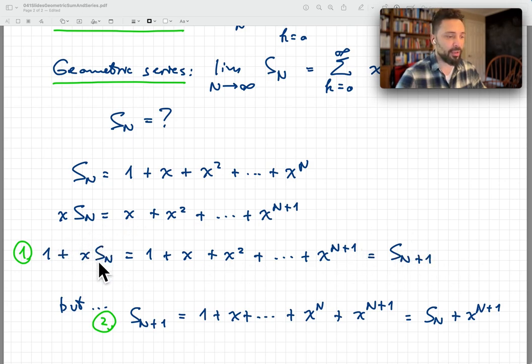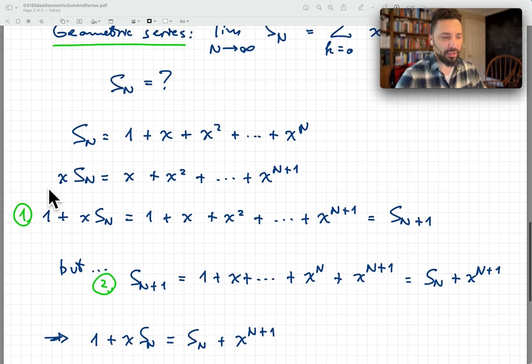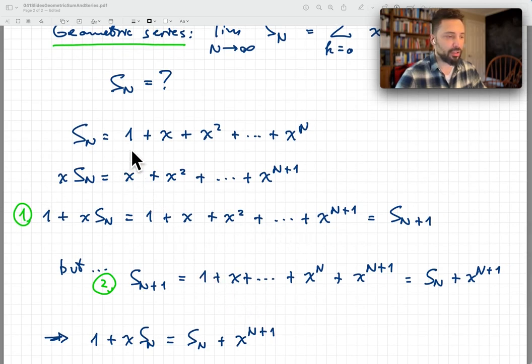So 1 plus x times S_n is S_n plus 1. But we know what S_n plus 1 is, actually. S_n plus 1 is exactly this whole thing, which is really just S_n plus 1 more term, which is x to the power n plus 1. And so in other words, S_n plus 1 is S_n plus x to the power n plus 1.